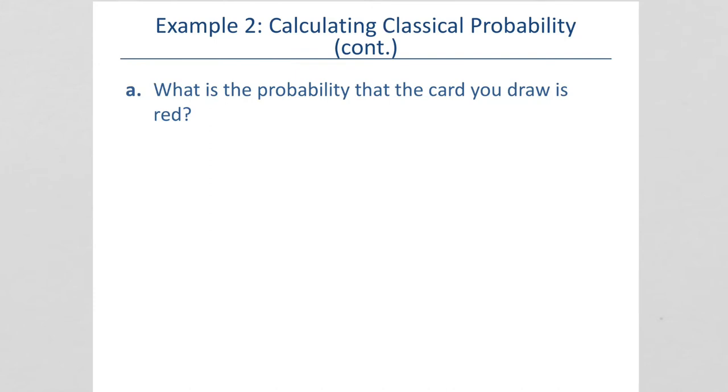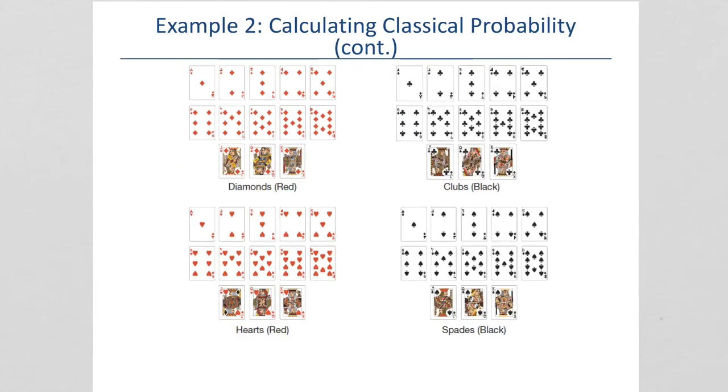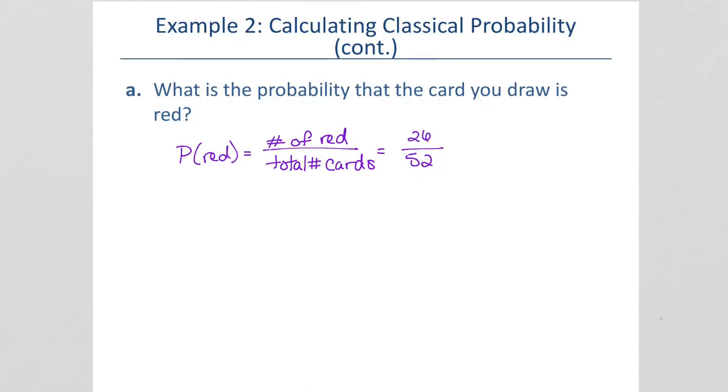What is the probability that the card you draw is red? We want the probability for red. We'll need the total number of red cards over the total number of all the cards. So, we know the total number of cards is 52. If we look back at our picture, we can see, if you count them up, 26 of them are red.